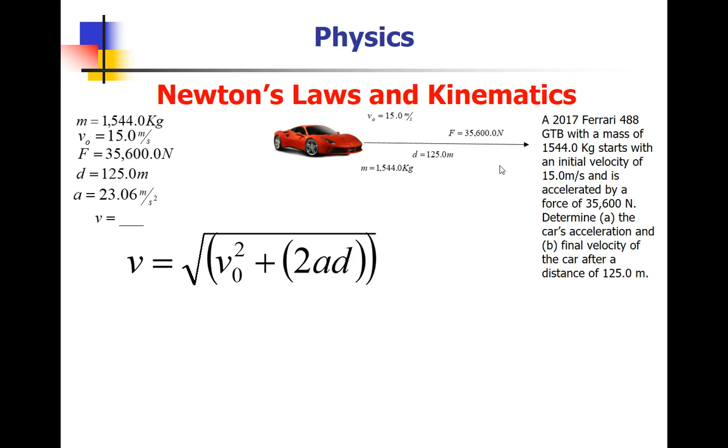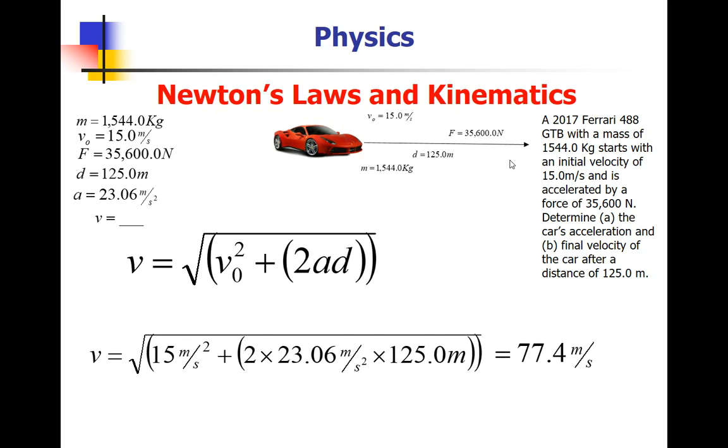Read it. Diagrammed it. And it gives no one looking for. Picked my equation. Plug and chug. Careful. Open a parenthesis after the square root sign. Then 15 meters per second squared plus open another parenthesis. 2 times 23.06 times 125. Close both parentheses. And what do you get? 77.4 meters per second. Oh yeah. That's moving. You're talking from 30 miles per hour to 180 miles per hour. Ferrari. They move.